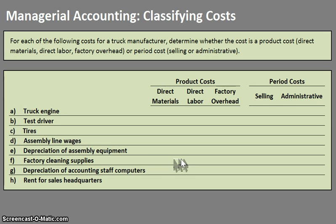Before we jump into this example, let's understand the differences between product costs and period costs. Product costs are all those costs involved in manufacturing a good — whatever goes into the materials to manufacture the good, the employees who are directly involved with actually manufacturing that good, and then any factory overhead, such as supervisor salaries, factory supplies, cleaning supplies for the factory, or factory rent.